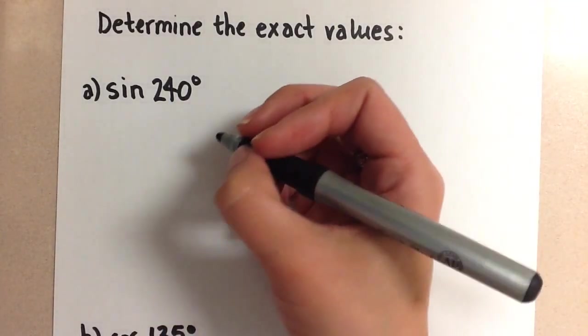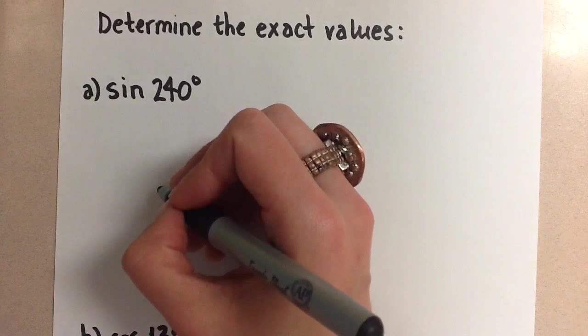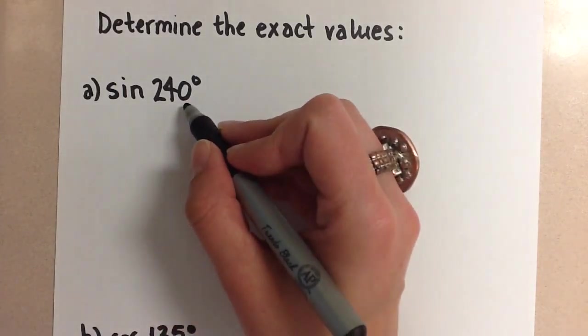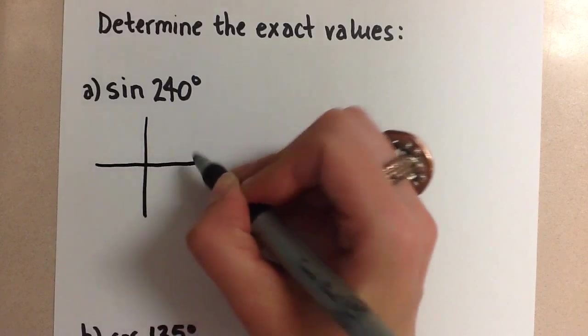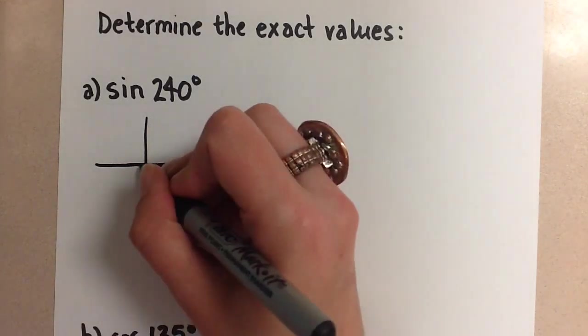To do that we start off always by doing a quick sketch of the angle that is in question. So the 240 degrees, if we sketch it quickly, will end up in the third quadrant.